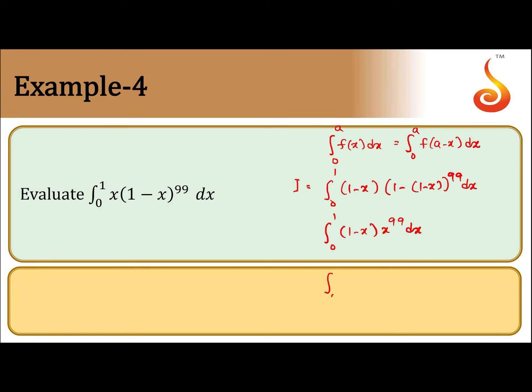So this will give you integral from 0 to 1 of x to the power 99 minus x to the power 100 dx. So this will give you, from 0 to 1, x to the power 100 by 100 minus x to the power 101 by 101.